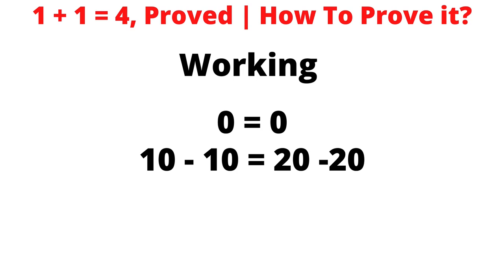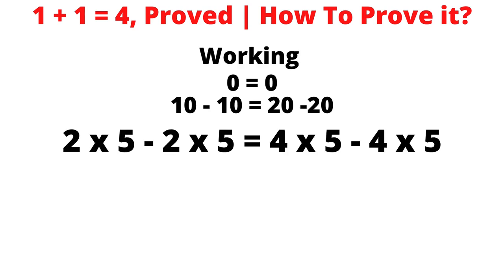One plus one equals four — proved. But how? Breaking the rules of mathematics. We all agree that zero equals zero, so ten minus ten equals twenty minus twenty, because ten minus ten equals zero and twenty minus twenty equals zero, which is the same as zero equals zero. So if you expand ten minus ten to two times five minus two times five, and twenty minus twenty to four times five minus four times five.